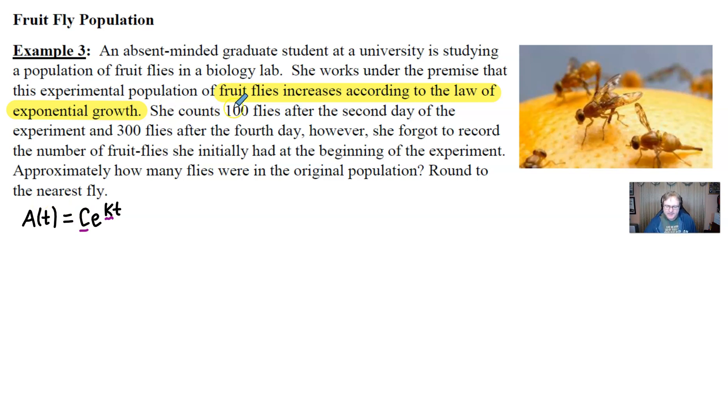Like the fact that she counted 100 flies after the second day. So you have to know that time would be 2 in that case. And the amount of flies would be 100, or A(2) = 100. Now, if you plug those in, you're going to find out that it's not going to help you find either c or k for that matter. It's going to give you an expression, an equation rather, that has both c and k in it still. But you might be able to shove that off to the side and do something with that here in a moment.